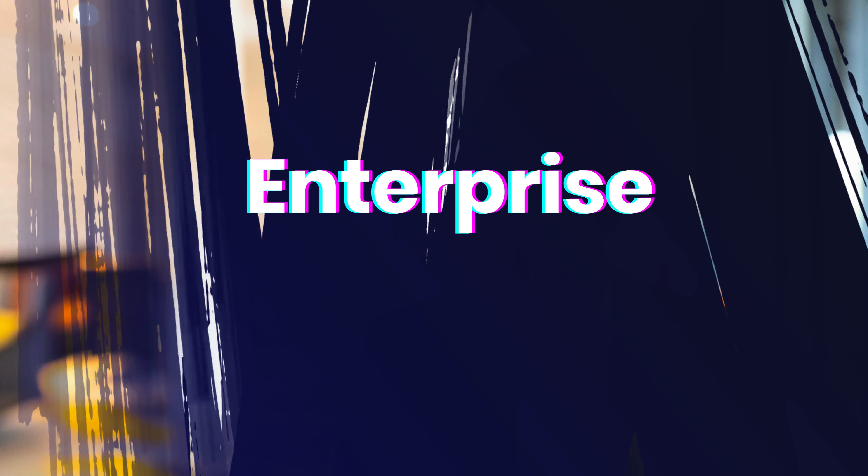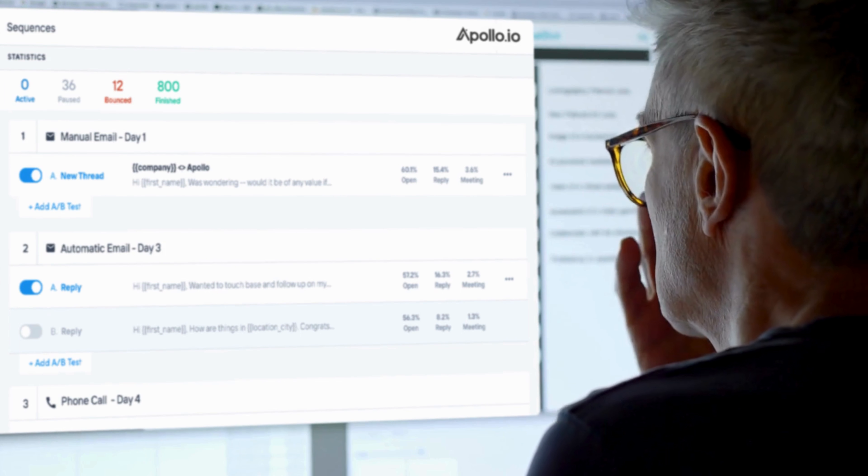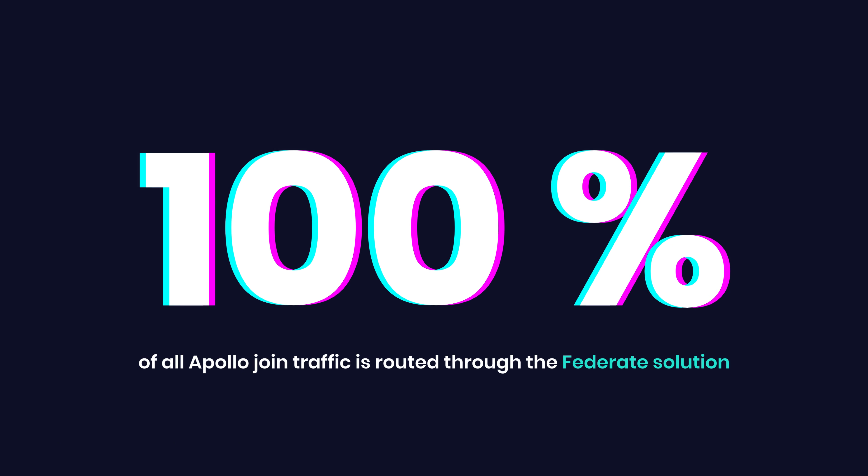We're really grateful to Renault and the team for helping us constantly optimize that number down. Siren for us really shines through with how we handle our enterprise search volume. This gives us capabilities to have a large, complex search at Apollo complete in around 1 second. This happens because Siren has enabled us to get the most out of Elasticsearch, quickly taking advanced joins and search criteria that customers give us and returning the data they need in record time. I can happily say now, many months later, 100% of all Apollo join traffic is routed through the Federate solution, which has been amazing. We've been able to clean up our older code paths, make our code base neater, and finally delete the old fake join solution.